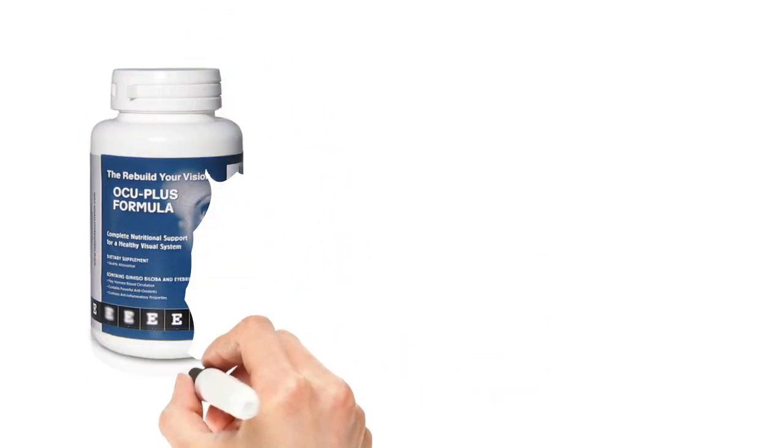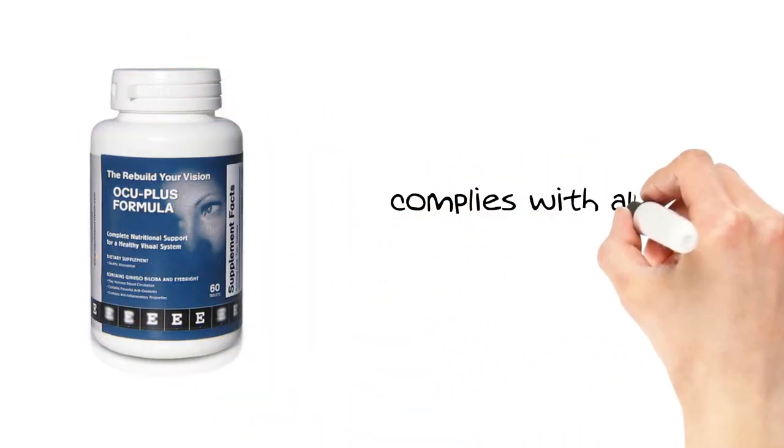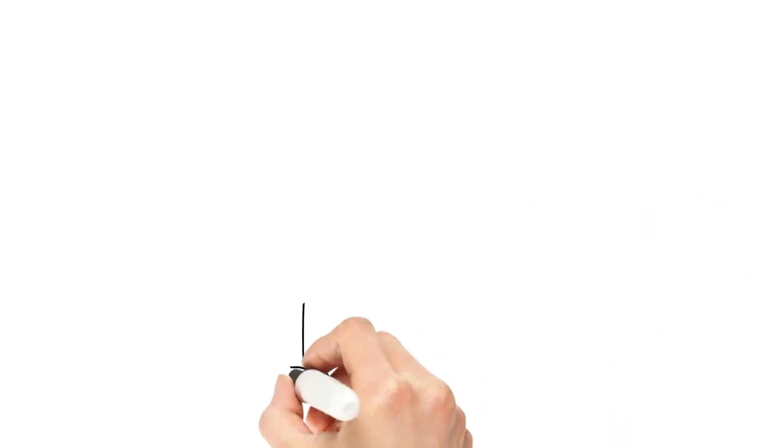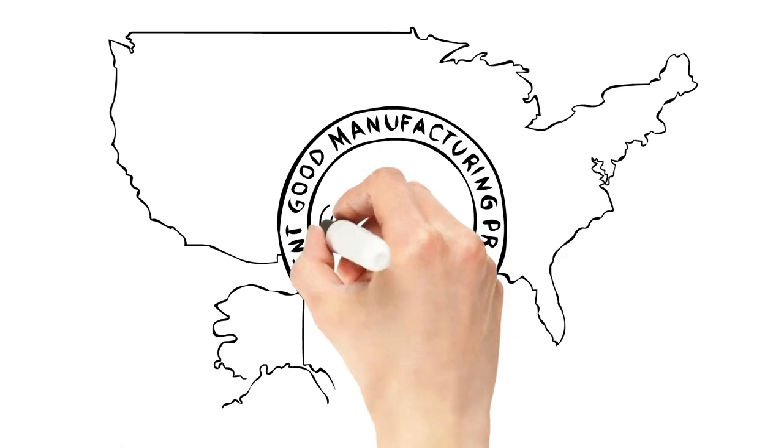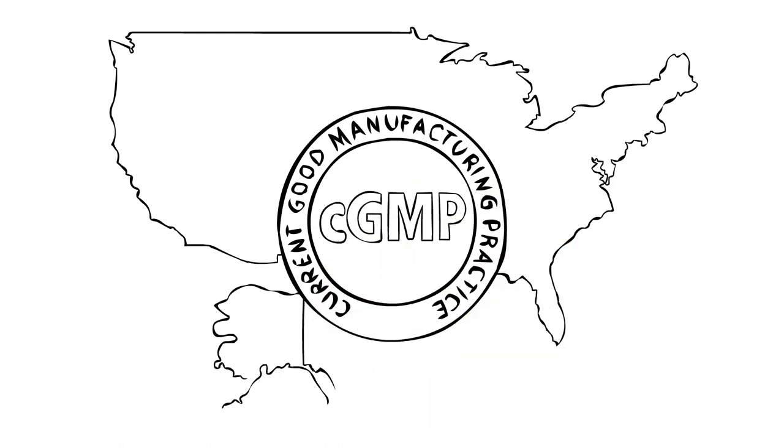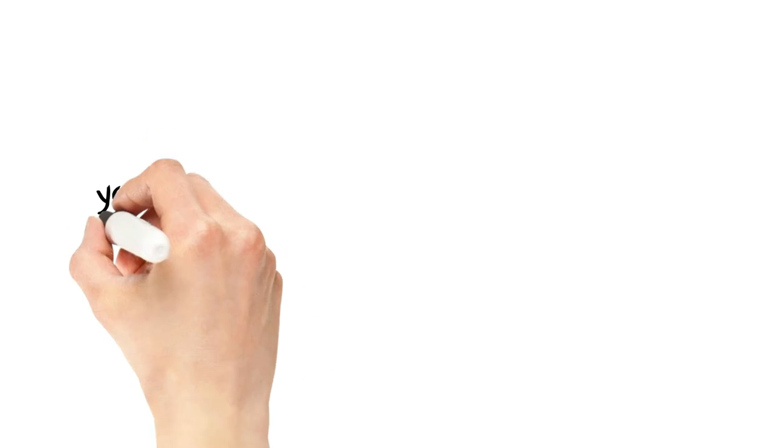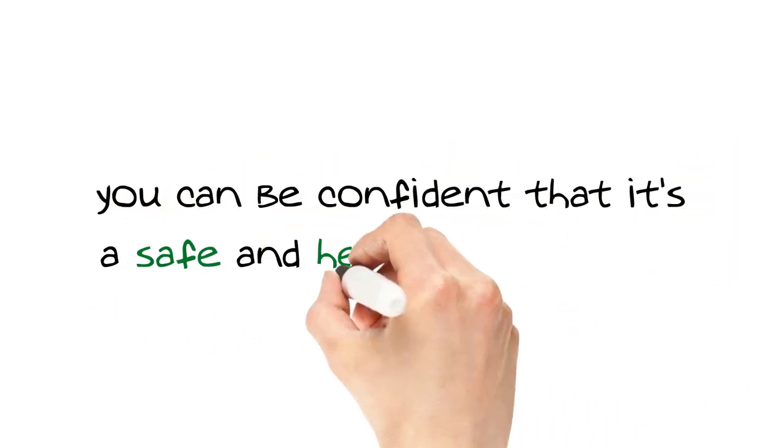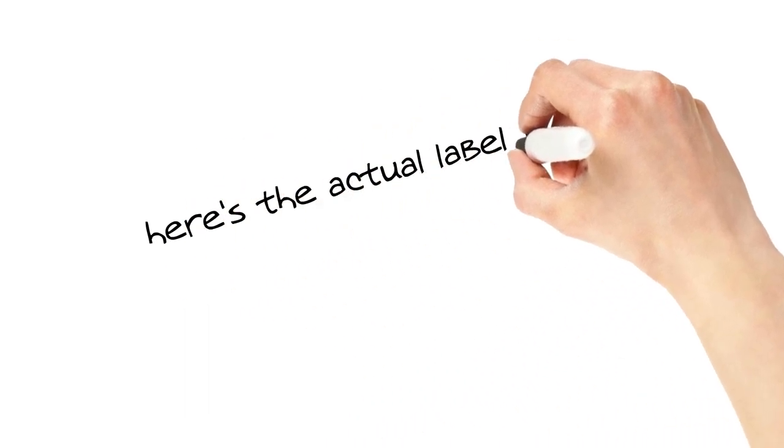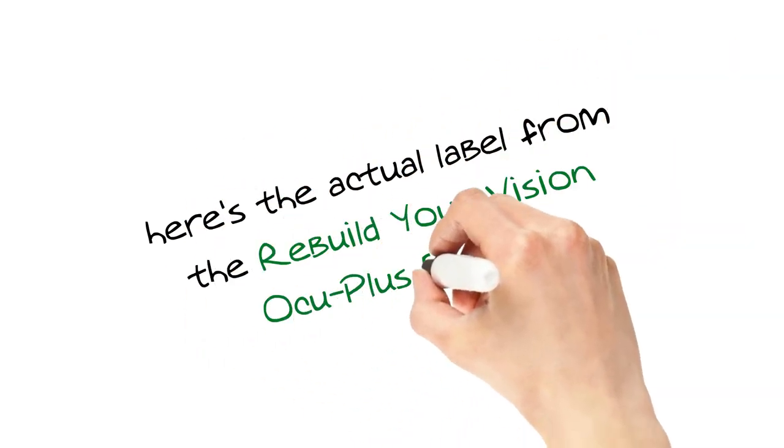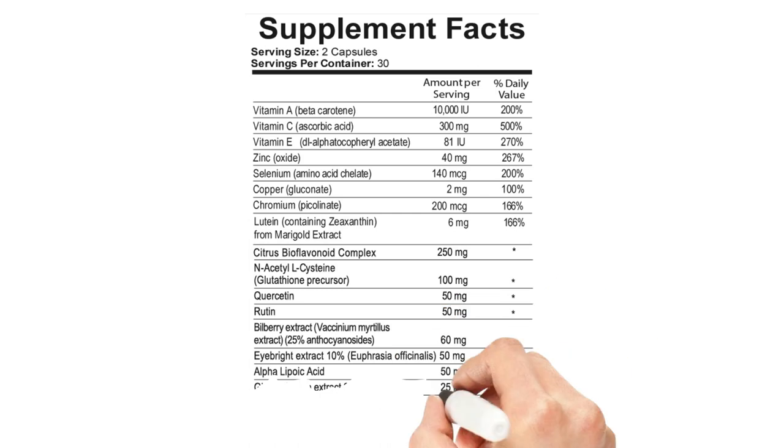The Rebuild Your Vision OcuPlus formula complies with all FDA rules and regulations and is manufactured in the United States under strict CGMP certification – CGMP stands for Current Good Manufacturing Practices – so you can be confident that it's a safe and healthy supplement. In fact, here's the actual label from the Rebuild Your Vision OcuPlus formula showing you exactly what nutrients it contains.